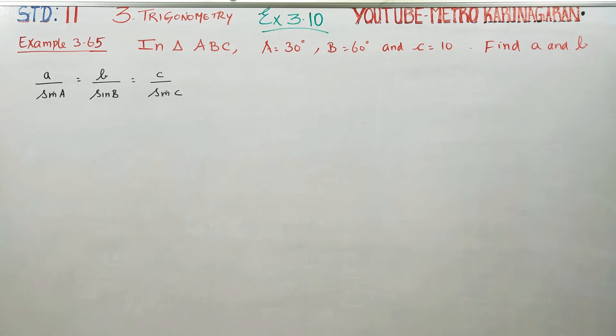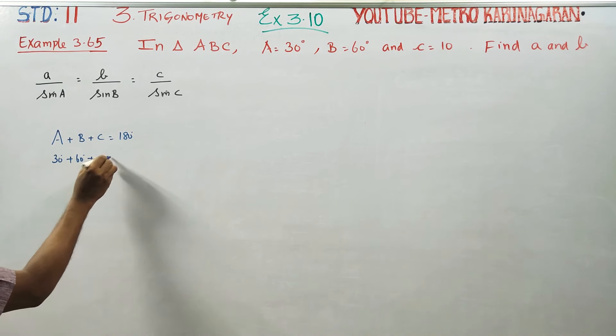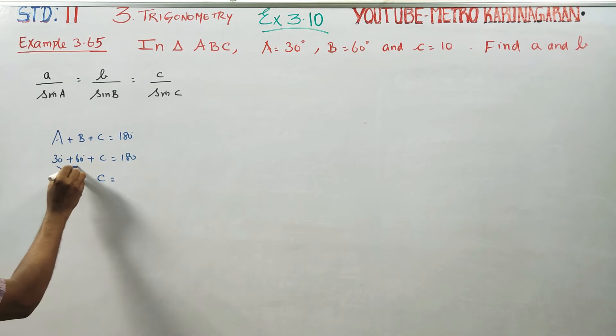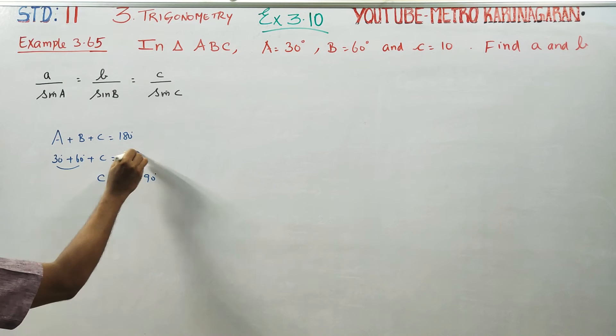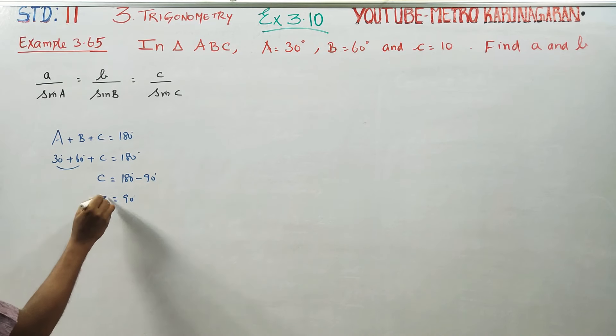In a triangle, the sum of all angles equals 180°. So 30° + 60° + C = 180°, therefore C = 90°. That is 180° minus 90°, so angle C is 90°.